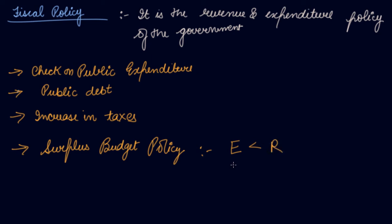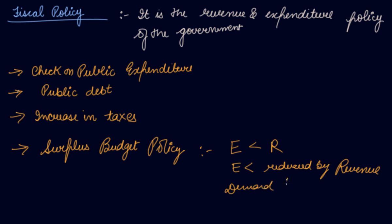If government expenditures are reduced relative to revenue, the government is reducing its demand. So demand will come down and ultimately prices will come down in the economy. These are the fiscal policies which help in controlling inflation.